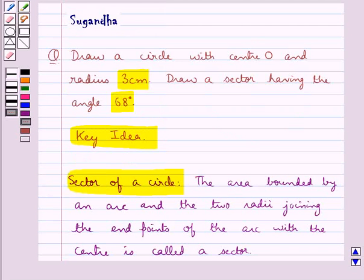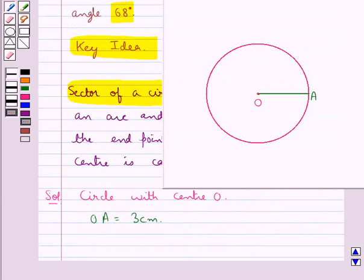Next, we need to draw a sector having the angle 68 degrees. To draw the sector using the protractor, we will keep the protractor with its center point on the center of the circle and the baseline of the protractor along the radius of the circle.